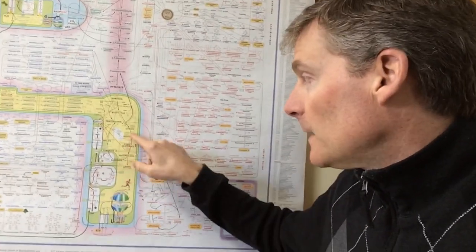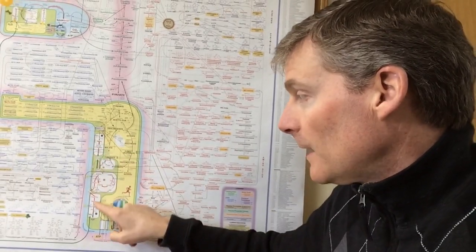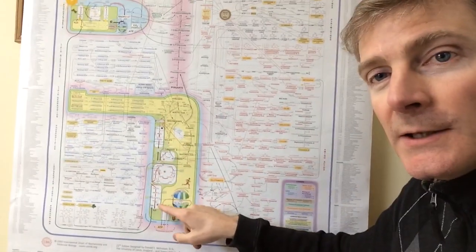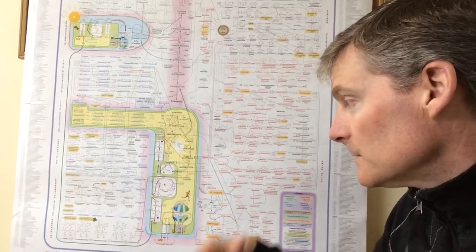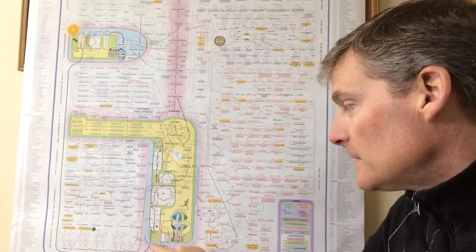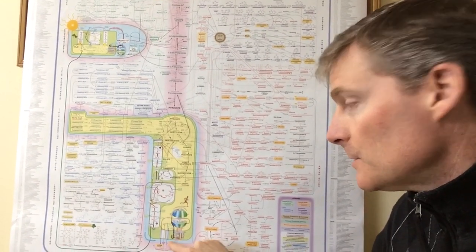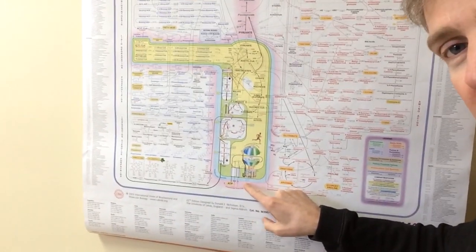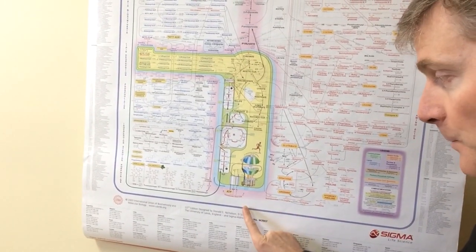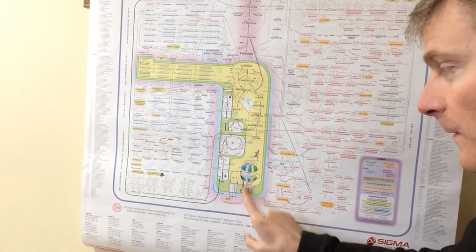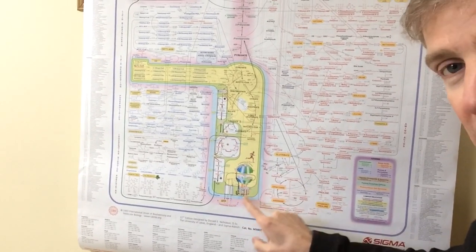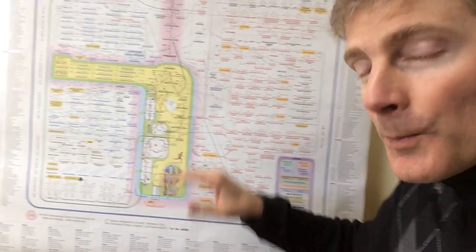Here and here we have what's called the electron transport chain, so moving electrons and hydrogens around. Then down here we have a buildup of hydrogens, and those hydrogens get pushed by force into this thing called ATP synthase where ATP is made. That's the whole point.